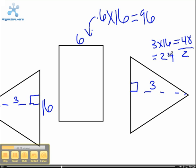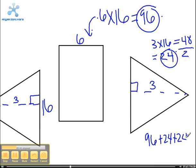Then step three, add and subtract the area from the whole shape, which is 96 plus 24 plus 24 to equal 144 square units.